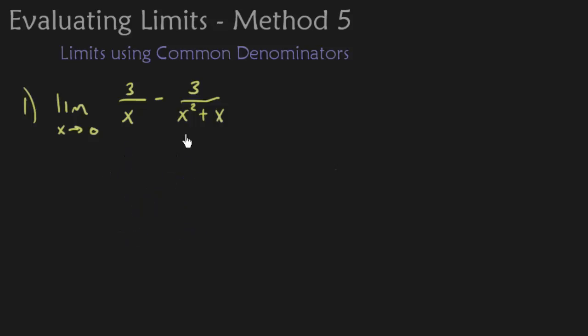So what we're going to do is use a common denominator, which means that I have two fractions. What I'm going to do is use a common denominator to make this one big fraction and then we'll see what we get. The first step is to see what our denominators are.